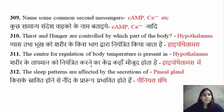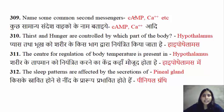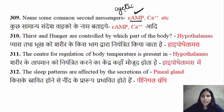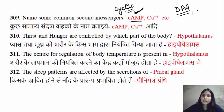The next question is about common second messengers. The most common name is cAMP — we call it cyclic AMP. The calcium ion is also a second messenger. DAG is another molecule that also acts as a second messenger.